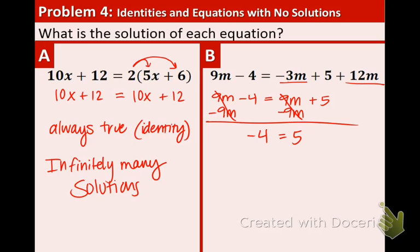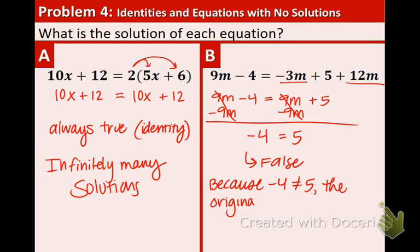No, it's not. It's a false statement. So you can write false. And when you get a false statement, the answer is no solution. So we're going to write, because negative 4 does not equal positive 5, the original equation has no solution. That means no number works when you plug it in for the variable.